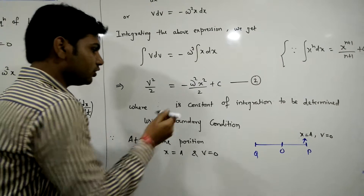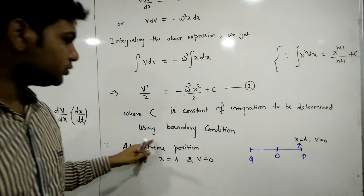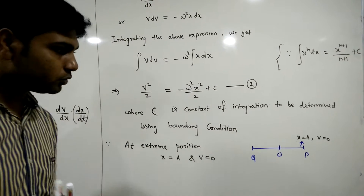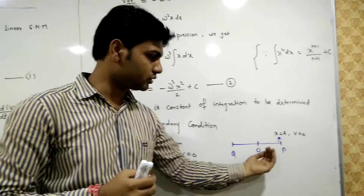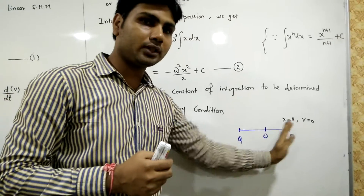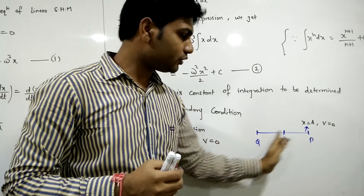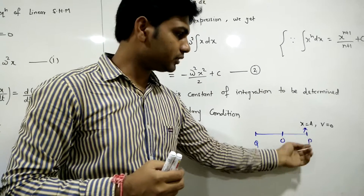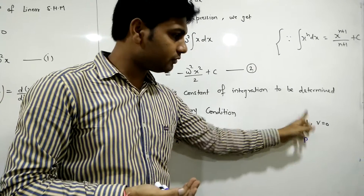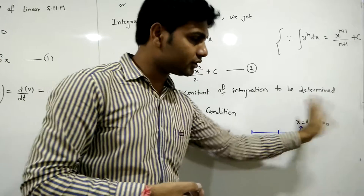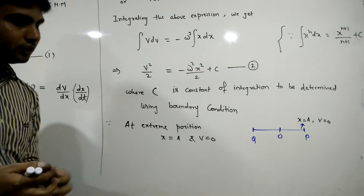The constant of integration C is to be determined using the boundary condition. We know that when a particle is set into oscillatory motion, it executes to-and-fro motion about the mean position. At the positive extremity, suppose at point A, x equals amplitude a and velocity is 0.